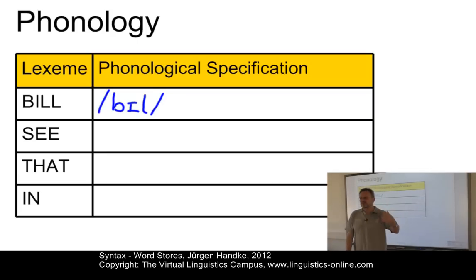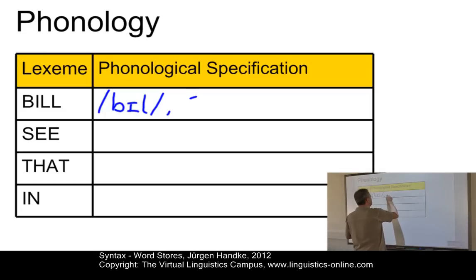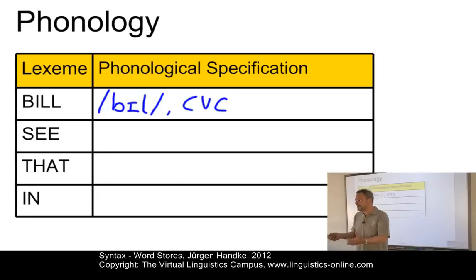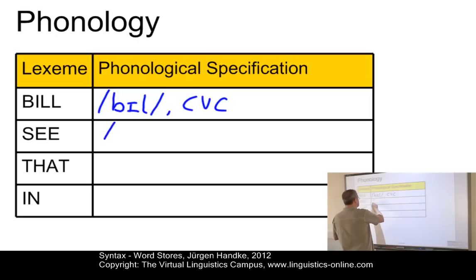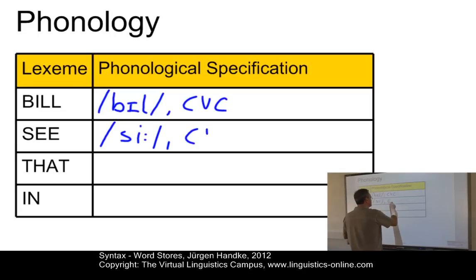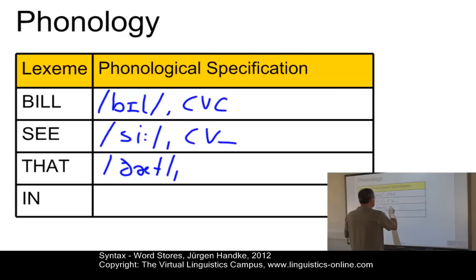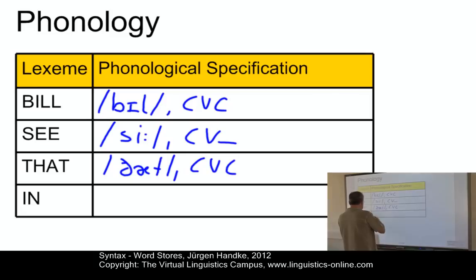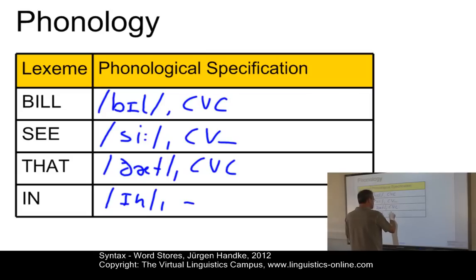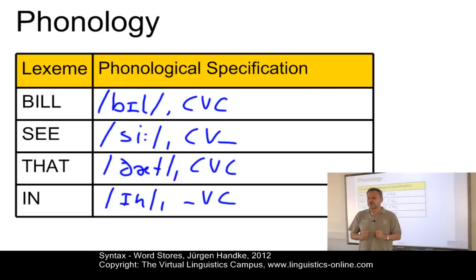So, here the fact that Bill consists of these phonemes. We could also represent allophonic information or distinctive feature information, but let's keep it as simple as possible. We have to represent information about the syllable structure. In this case, it is a typical syllable with an onset, a peak, and a coda. We might want to add stress aspects and intonational aspects, but here we don't have to because we have a monosyllabic entry in present-day English. Likewise, we have C, and we have that — which is an interesting element, as it can be a weak form in connected speech. And finally, we have the preposition 'in', which has just a V-C structure. This is the phonological representation of our four lexemes.